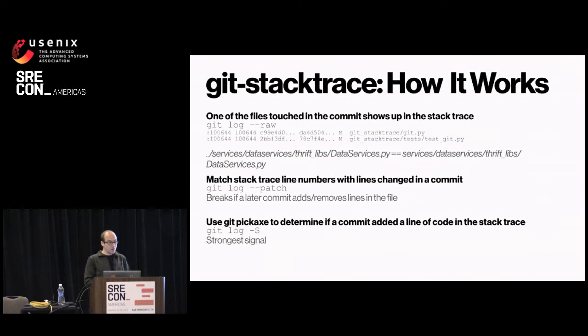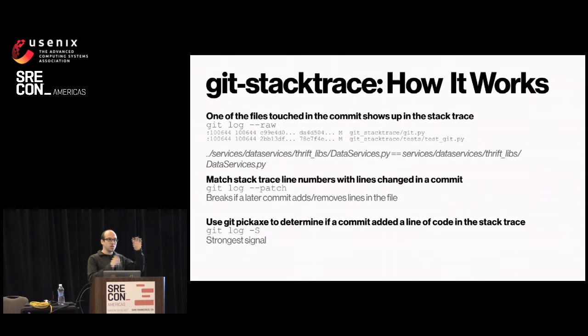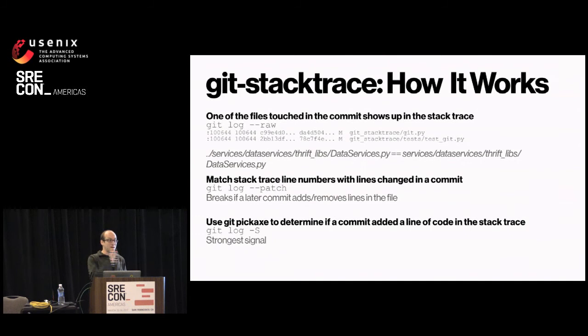To deal with that, we use git pickaxe — 'git log -S' — which is a somewhat hidden but really powerful tool. It looks for commits that added or removed a given substring or regular expression. So you can search: what commit actually added this line or this variable? It ignores whitespace changes, line additions elsewhere, and file renames — canceling those out so you clearly see who wrote what. This is better than git blame, which may show the last person who only added whitespace or a comment. We use this to look for who added each line of code in the stack trace.